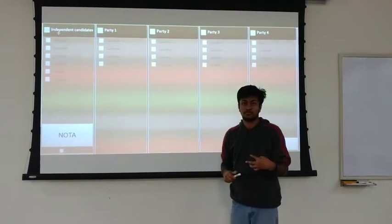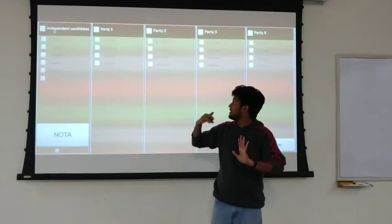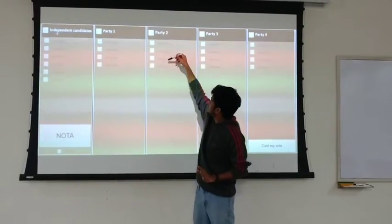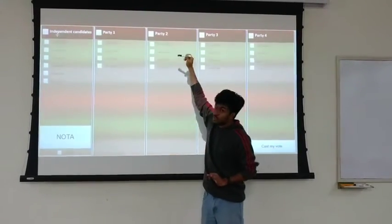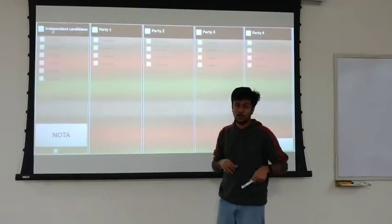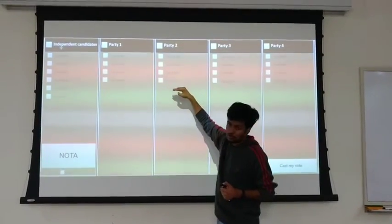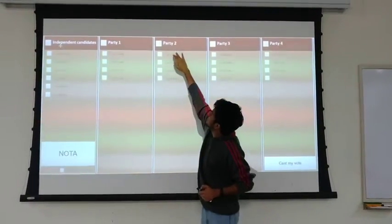But suppose you want to vote for only particular members of the party, not everyone. In that case you can select from within one party the few people that you want to vote for. For instance, if I wanted to vote for candidate 1, 3 and 4 from party 2, I would select these three options.